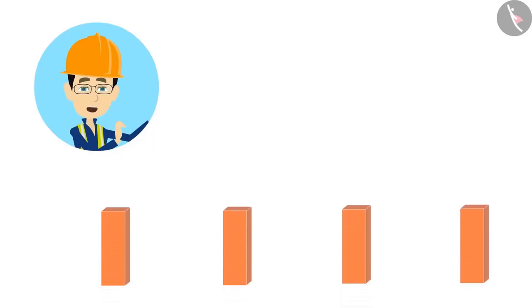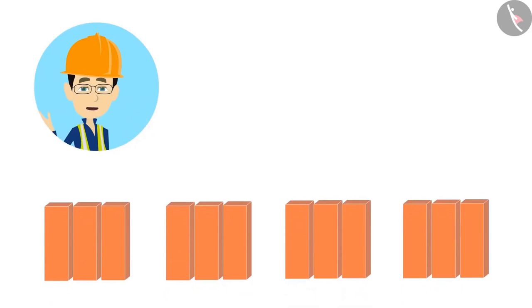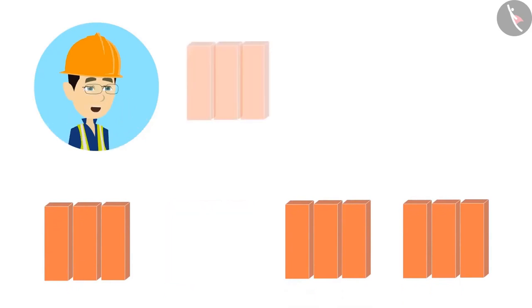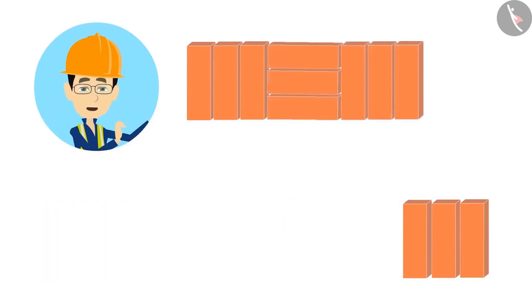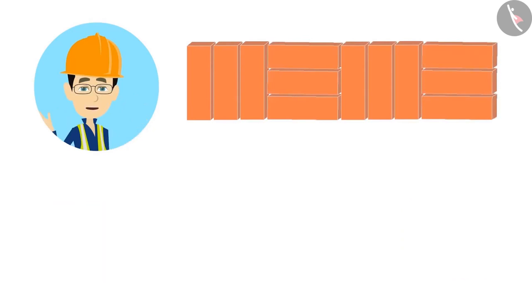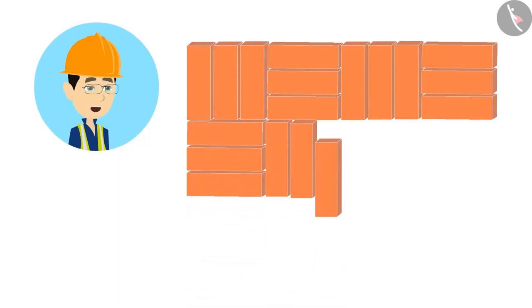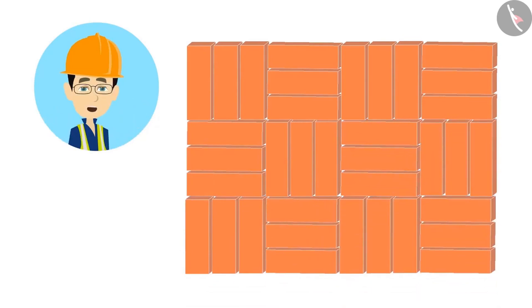See, first make groups of three bricks. Let's make the first line from these groups. For that, let's keep a group in such a way that the bricks are vertical. Then keep a different group in such a way that the bricks are horizontal. Once again, a vertical group and a horizontal group. Now let's make the line below it. Because the top line has started with vertical bricks, then this line will start with horizontal bricks. Then followed by vertical bricks. And then horizontal bricks. In this way, we make a complete pattern.